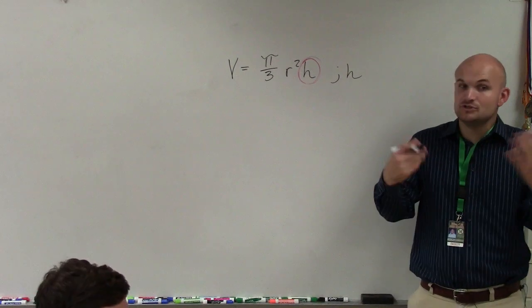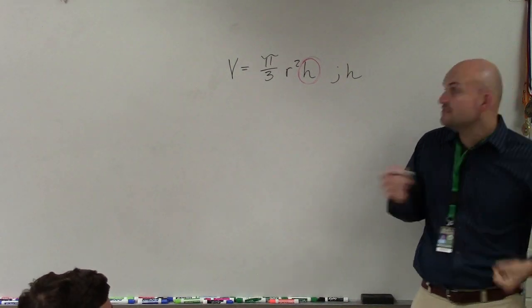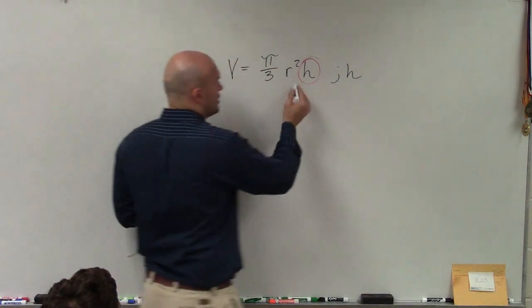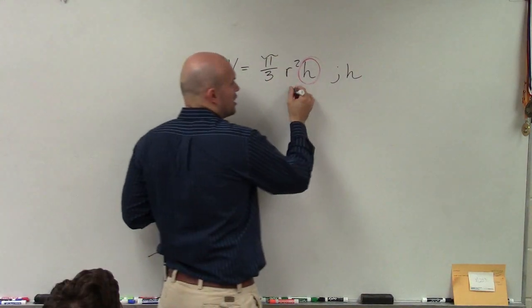It's being multiplied, right? So how would you undo multiplication? Division. Now, you could do these at the same time, but I'm going to do them separately. So let's just undo multiplication by r squared.